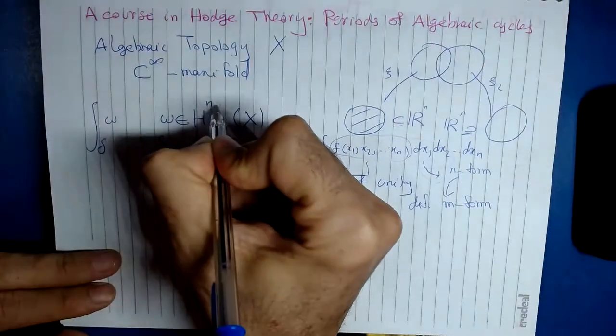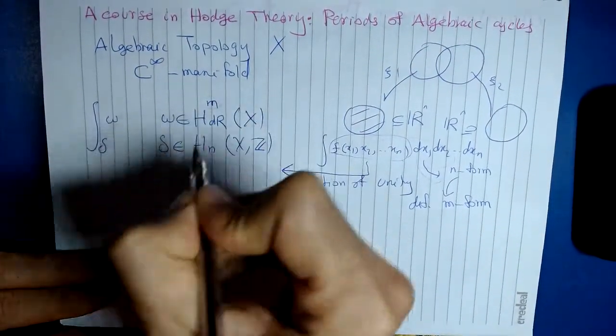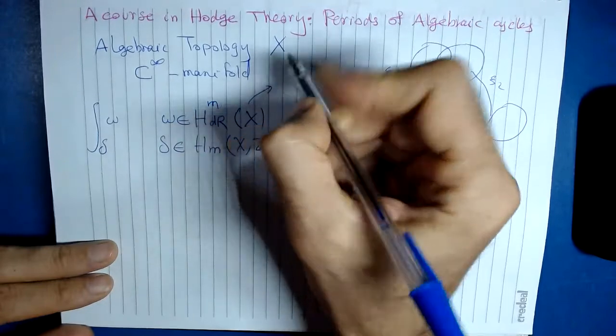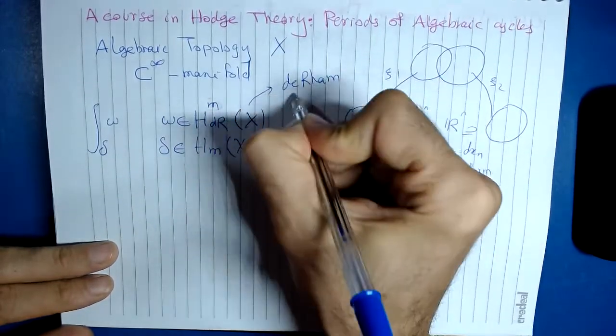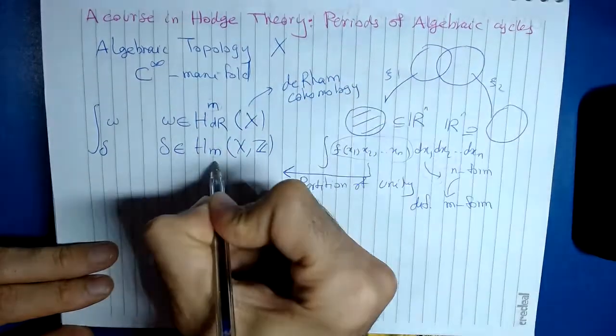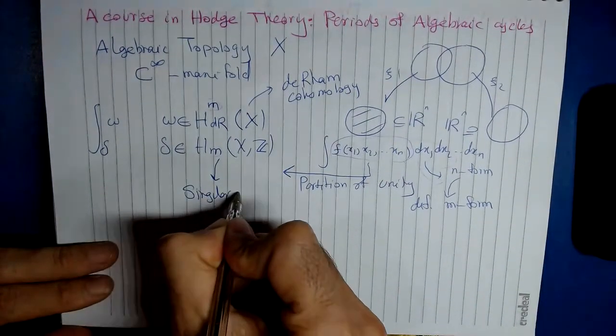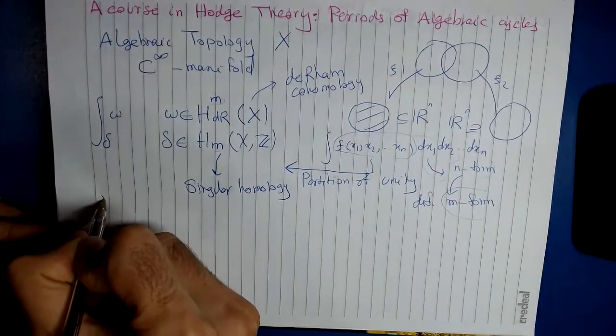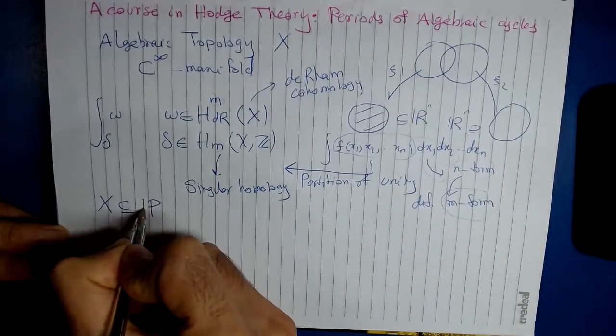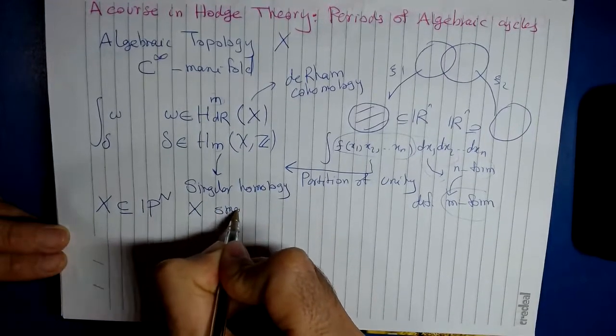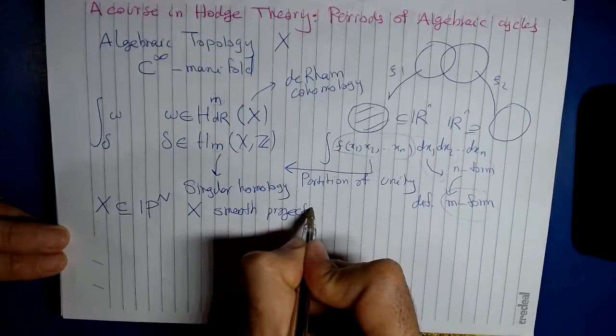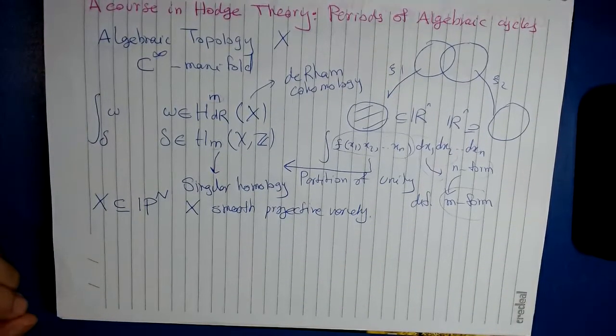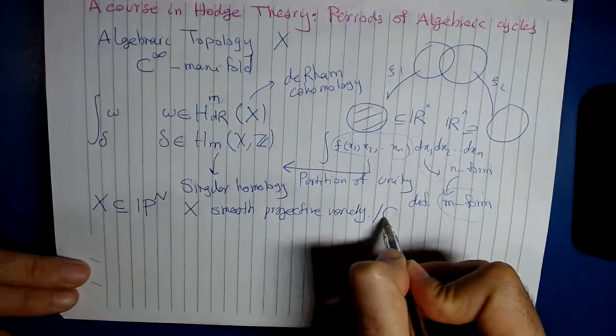Here instead of just dimension of X, we can put arbitrary m. In the course of differential topology we define the de Rham cohomology, and this one singular homology. But we want to apply all this machinery to a projective variety, actually X is smooth projective variety, and everything will be over complex numbers.